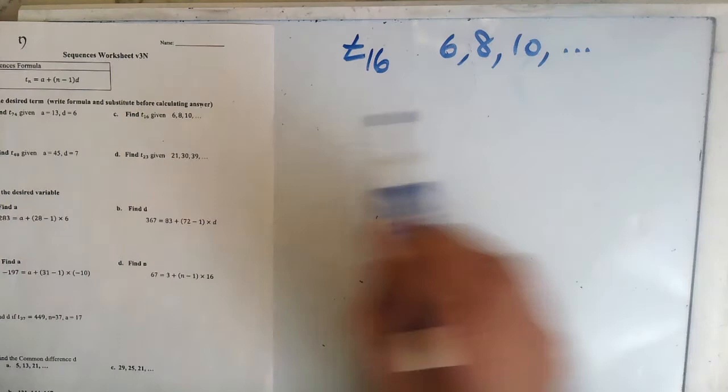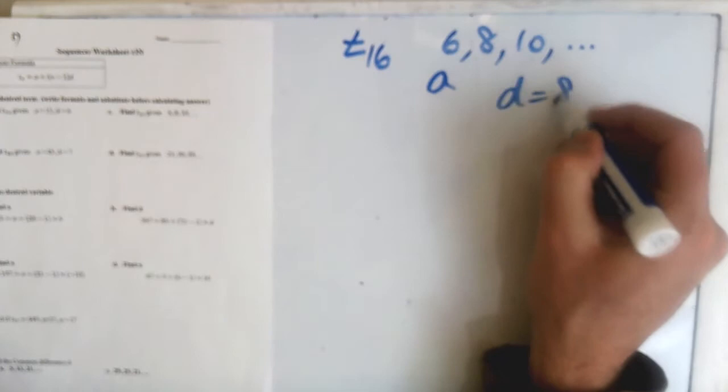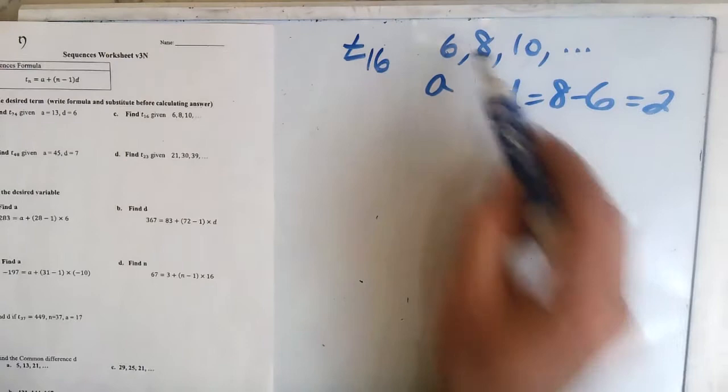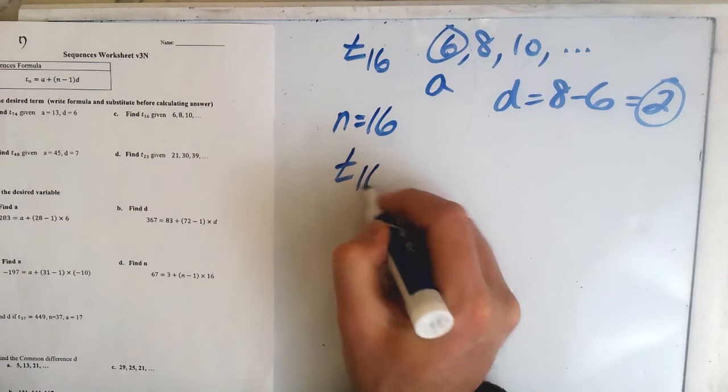Second question: we're asked to find T16, and we're not given A and D this time — we're given the first three terms. A is the first term, which is 6. To find D, we have to subtract: take term 2 minus term 1, or term 3 minus term 2. The hardest one to find is N, which is 16.